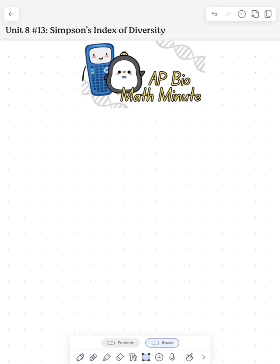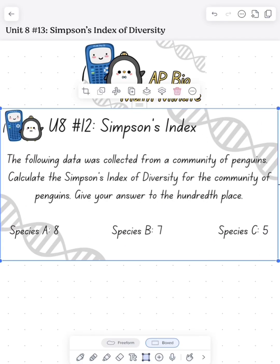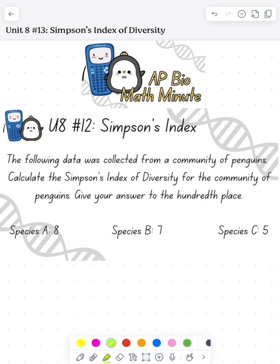What's up, APVAL penguins? Today we're going to do a little APVAL math minute looking at the Simpson's Index of Diversity. We have a community of penguins, and we need to calculate their index of diversity for that community, knowing that species A has 8, species B has 7, and species C has 5, and we want to give that to the 100th place.